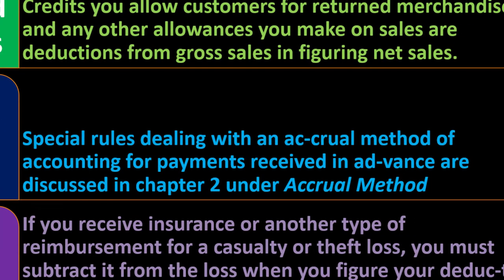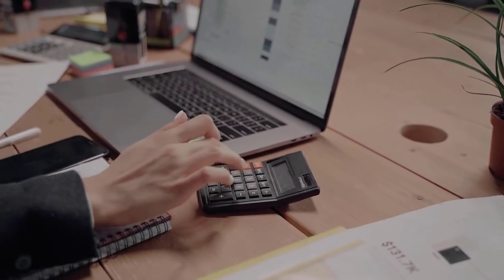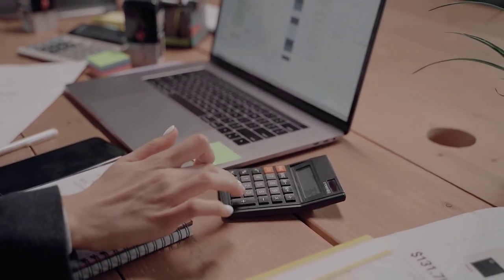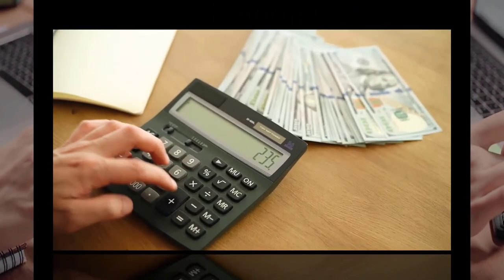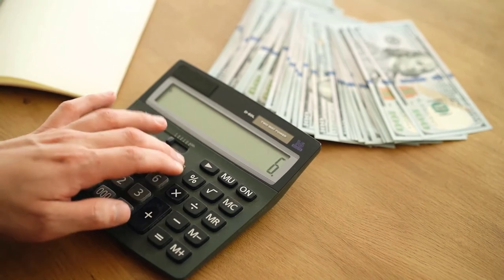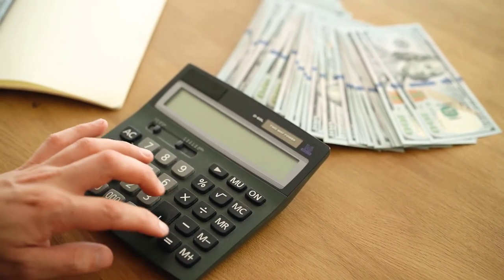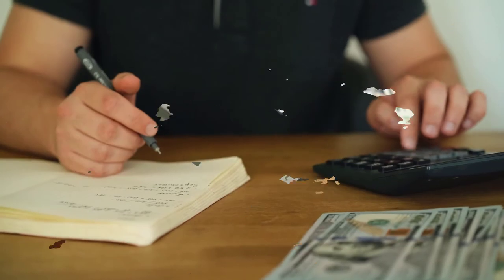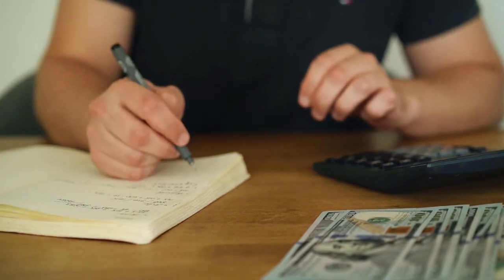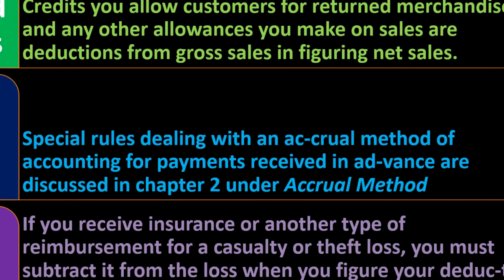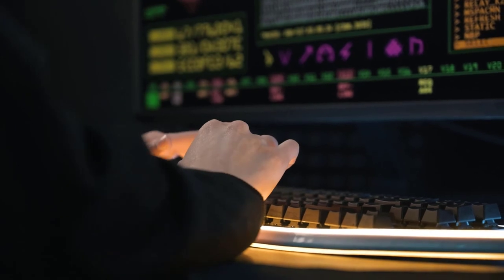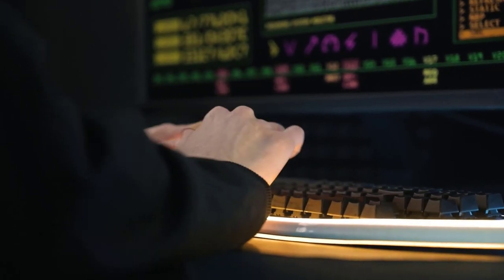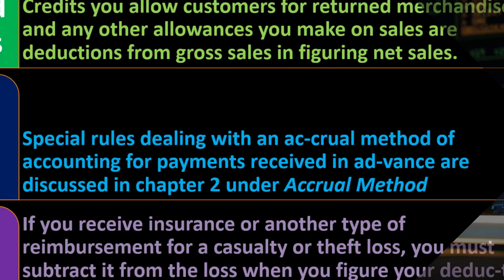Special rules for accrual-method taxpayers dealing with payments received in advance are discussed in Chapter 2. Under accrual accounting, an advanced payment received before you perform the work would not normally be recorded as income — it would be unearned revenue. However, the IRS may deviate from the accrual method here: if you have the money and can constructively use it with no obstacle, the IRS wants their share. Advanced payments are common in subscription-based businesses such as software, magazines, or newspapers.